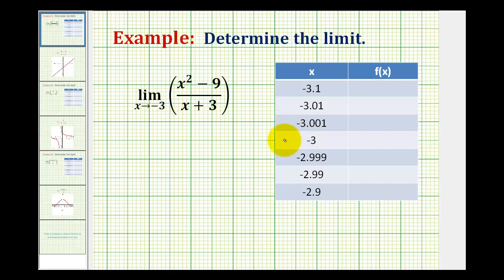Notice how in our table we have negative three in the middle, and then we have three rows above and three rows below negative three.